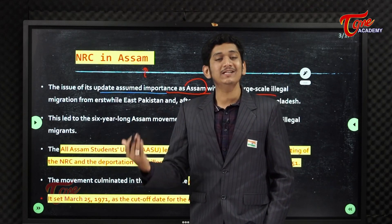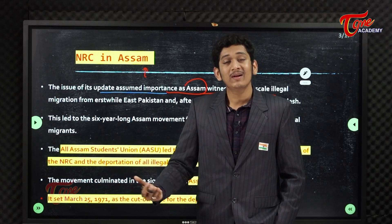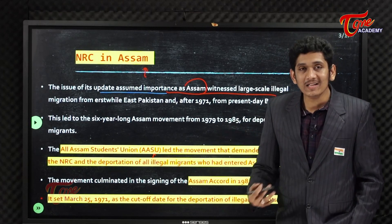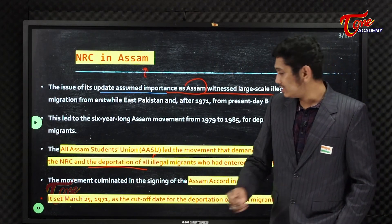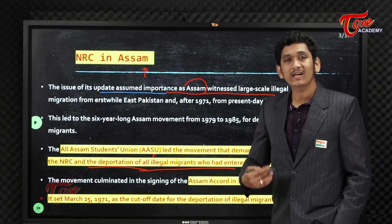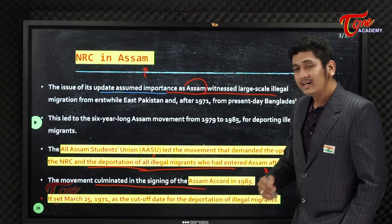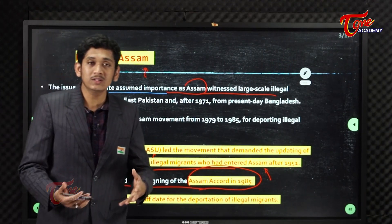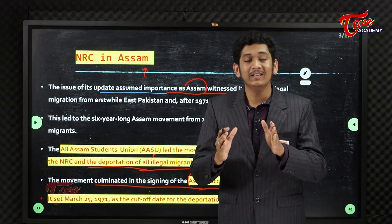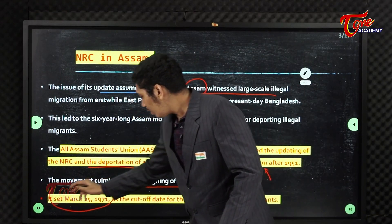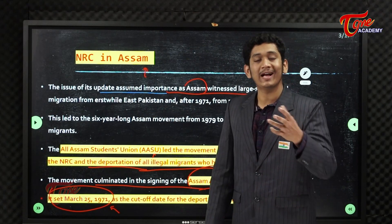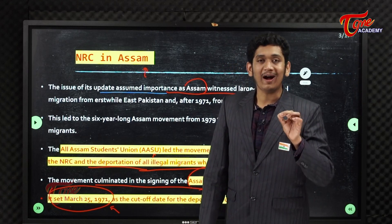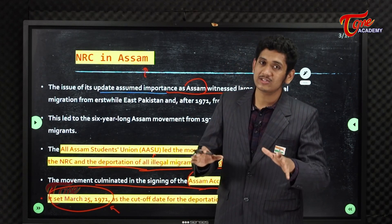Because of this change in demography, especially the students located in Assam, people formed the All India Assam Student Union and started a protest for a revised NRC and deportation of all illegal migrants who had entered Assam. The movement culminated into the signing of an accord called the Assam Accord in 1985. According to this accord, it was promised that we will revise the NRC, and a cut-off date was set — whoever comes after March 25th, 1971 from Bangladesh or any other area will be considered an illegal migrant.